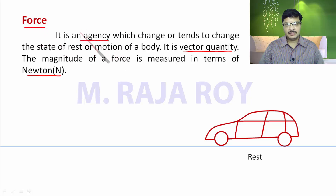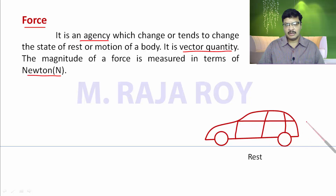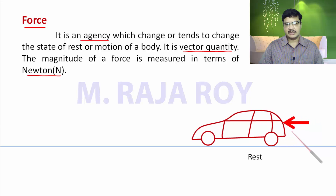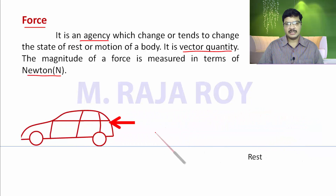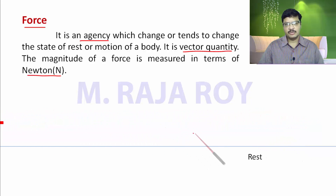What is an external agency? External agency means, for example, if you take a toy car that is at rest. If I want to disturb its position from rest, I have to push it. When I push it, its state is disturbed from rest and it starts moving. That is nothing but force — the effort which tends to change the state of the object is called force.